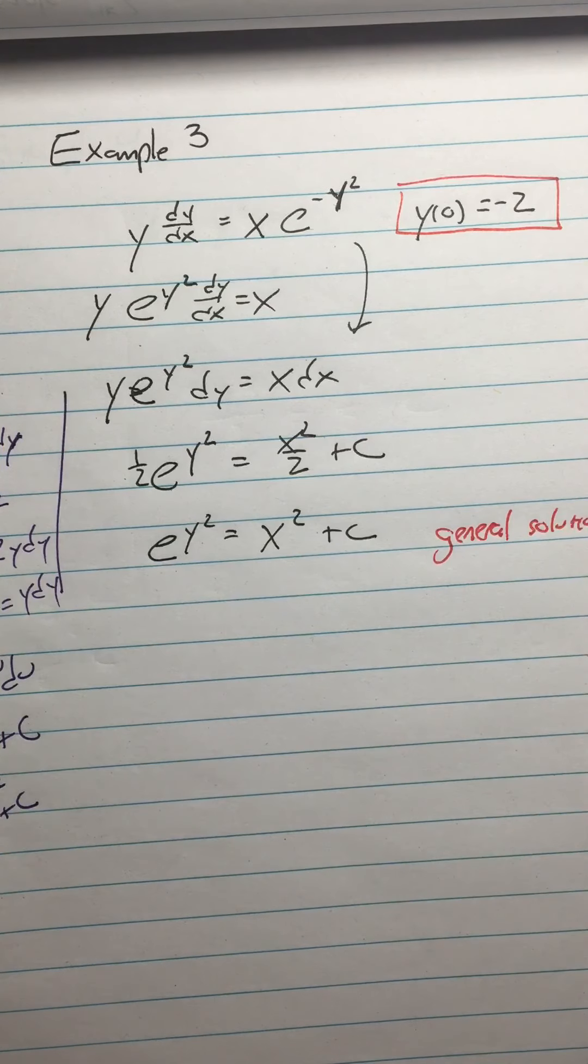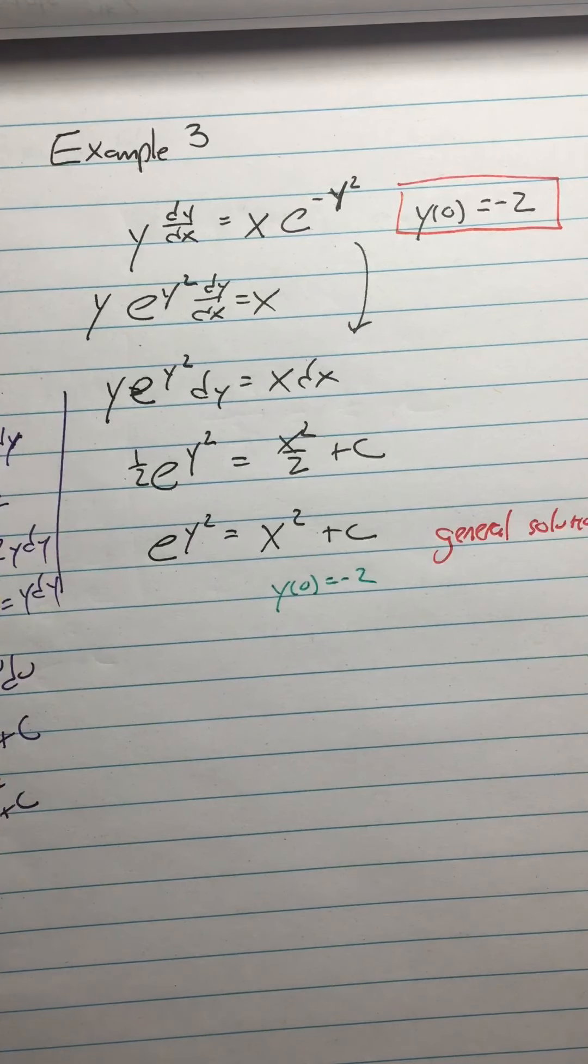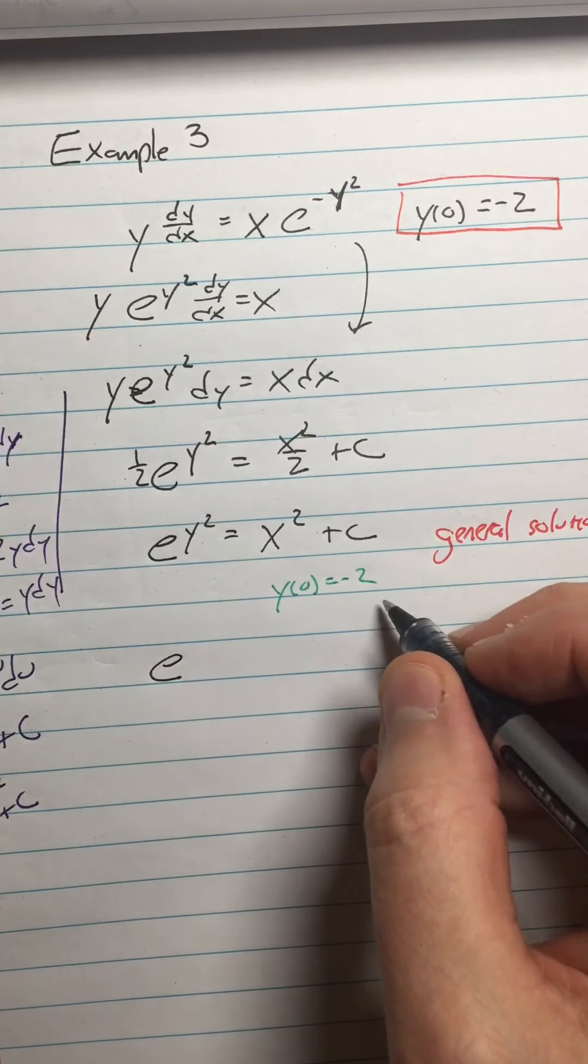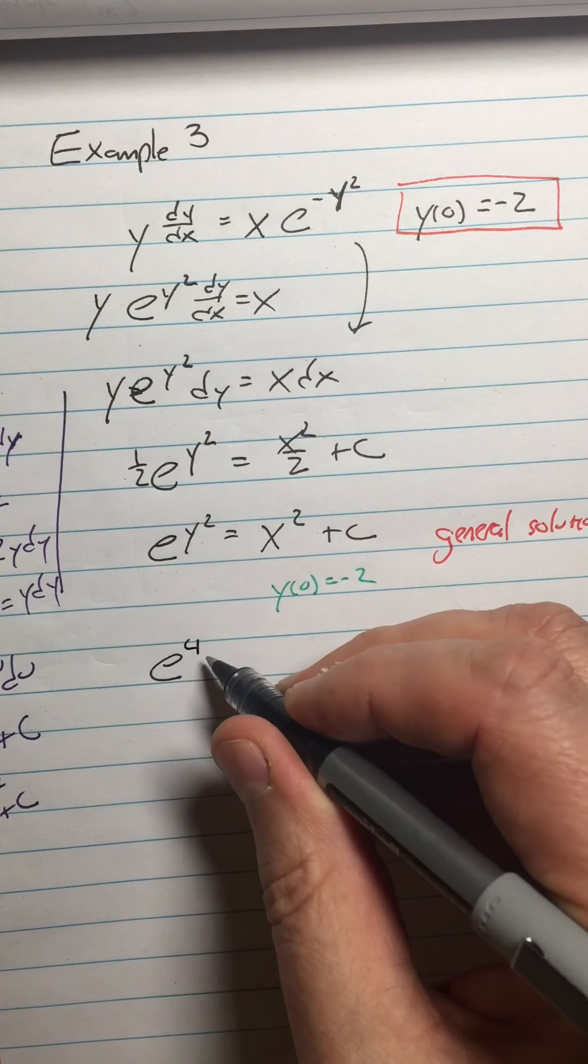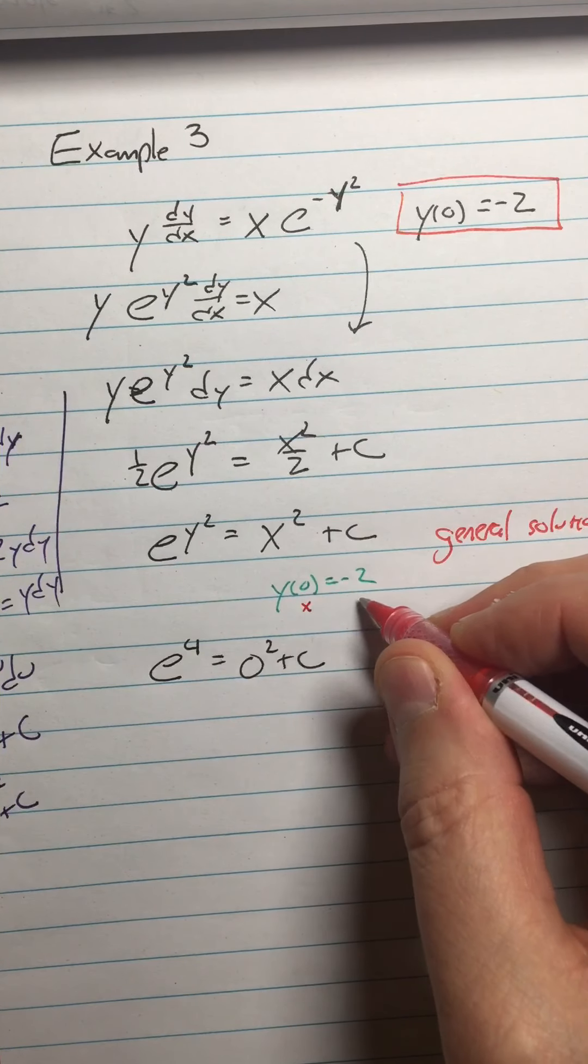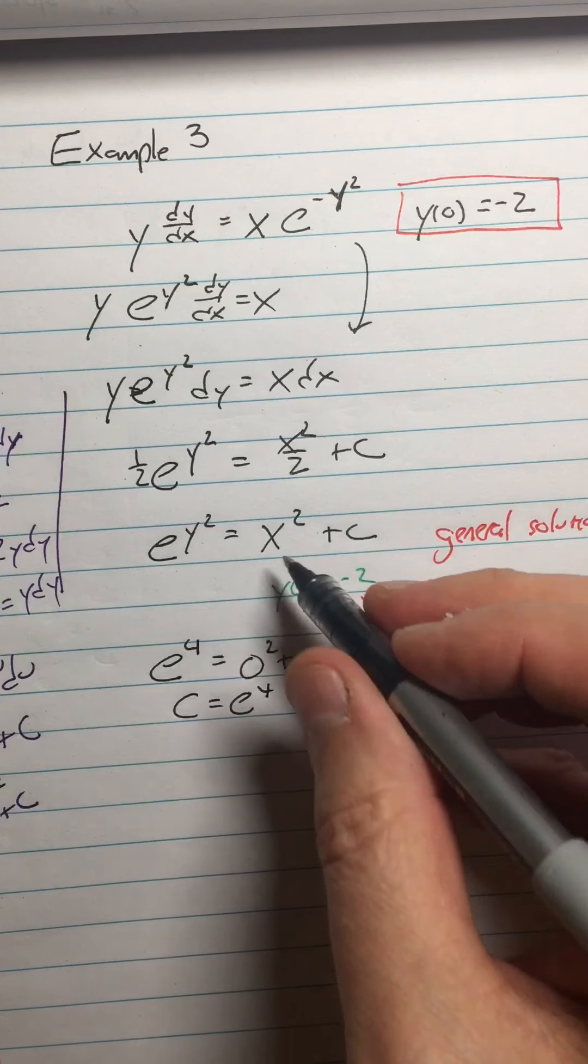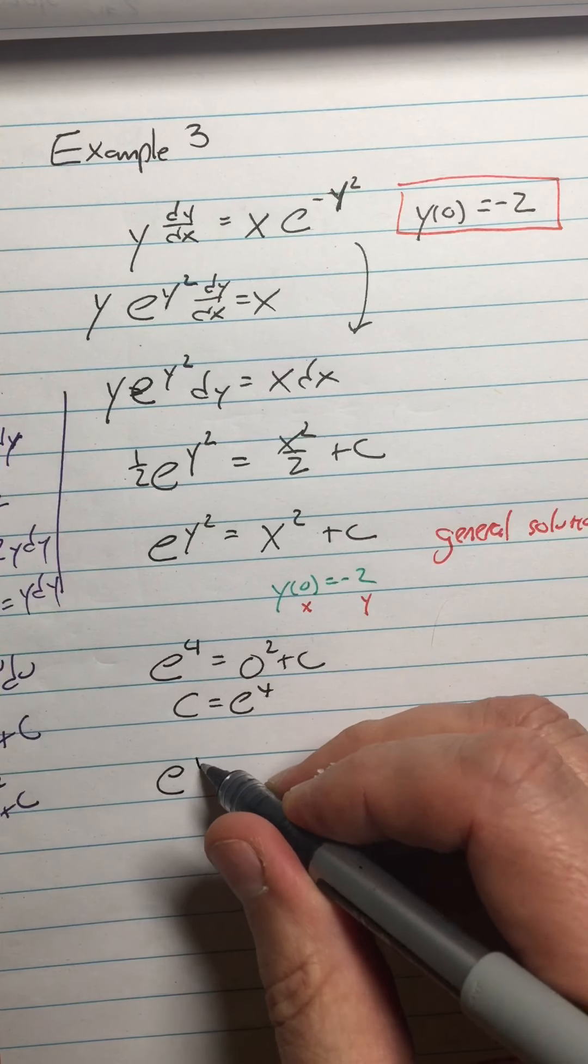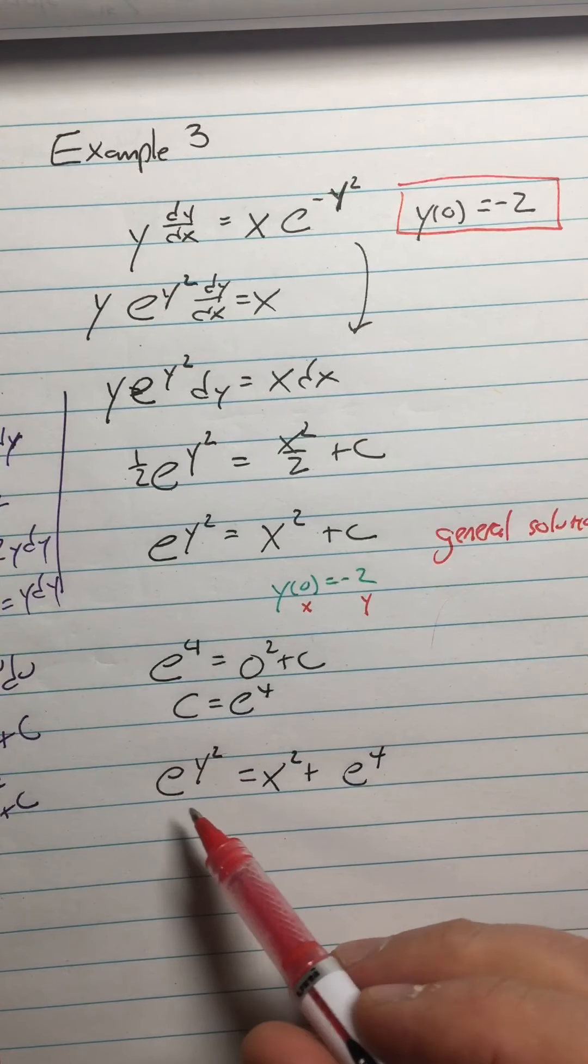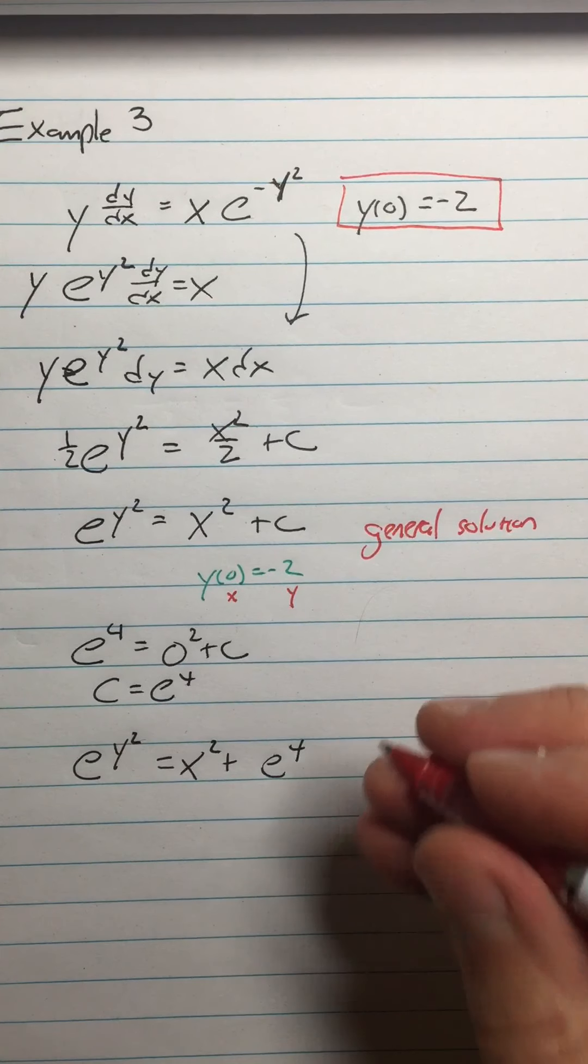All right, now to do the particular solution, I use my y of 0 equals negative 2. So since y of 0 equals negative 2, that means that e to the 4th power, right? So the y is 4. e to the 4th power equals 0 squared plus c. You know, I did this backwards when I did my, when I tried it. Remember, this is the x here and this is the y. I reversed those. Anyway, so that tells us that c equals e to the 4th. And then so my particular solution is e to the y squared equals x squared plus e to the 4th power. So if you want, as an exercise, solve this for y by taking the ln of both sides and the square root of both sides to get the y by itself. But that's not necessary. I'm going to accept it here.